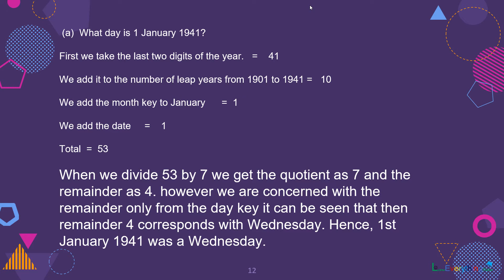So we add them, that is 41 plus 10. Next we add the month key to January, that is 1. January's place in the month key is 1, so we add it. And then we add the date, that is again 1.